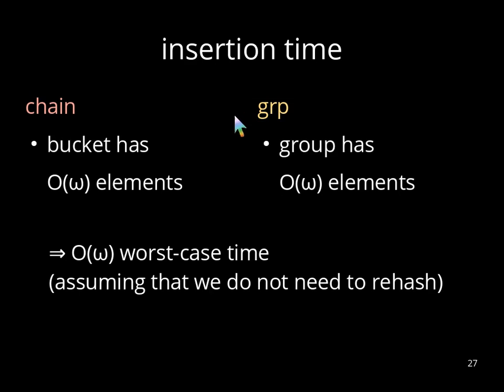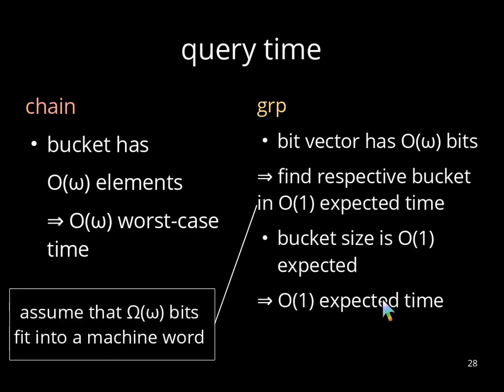So insertion costs order omega worst case time, assuming that we don't need to rehash. Considering querying, for chain, we use the same argument that a bucket has at most order omega elements. And therefore, the query time is order omega in the worst case. For group, we use the group bit vector to find the respective bucket. But because the bit vector has order omega bits, we can find this bucket in constant expected time, assuming that omega bits fit into a machine word. And because the bucket size in group is constant expectedly, we get constant expected time overall.